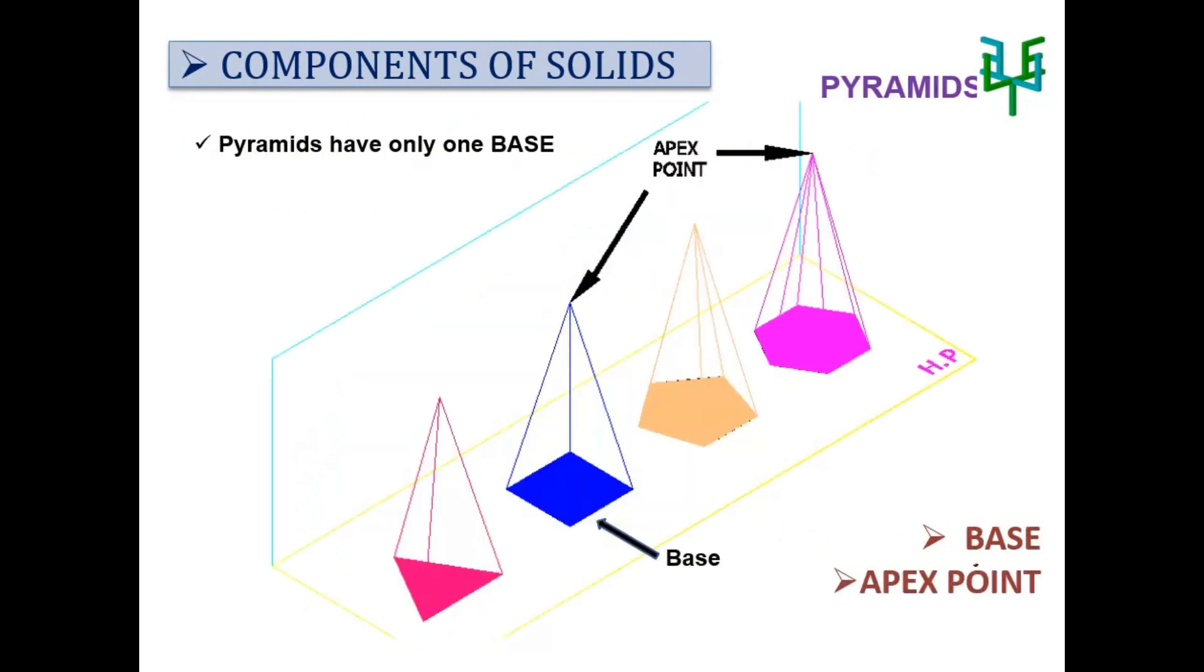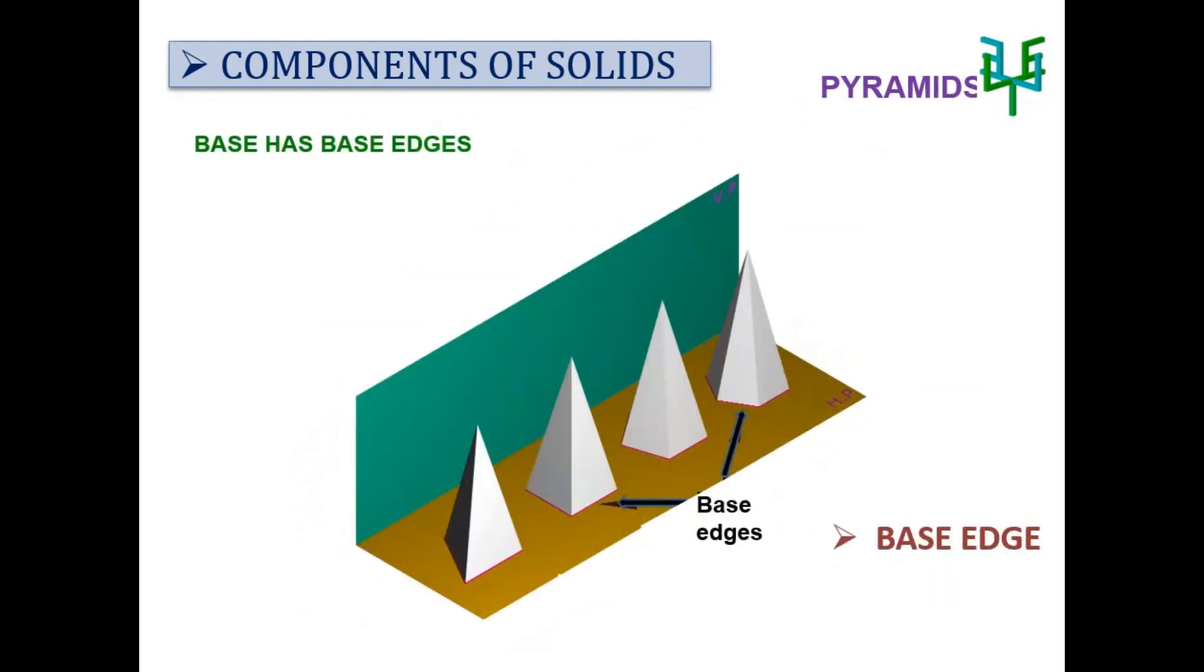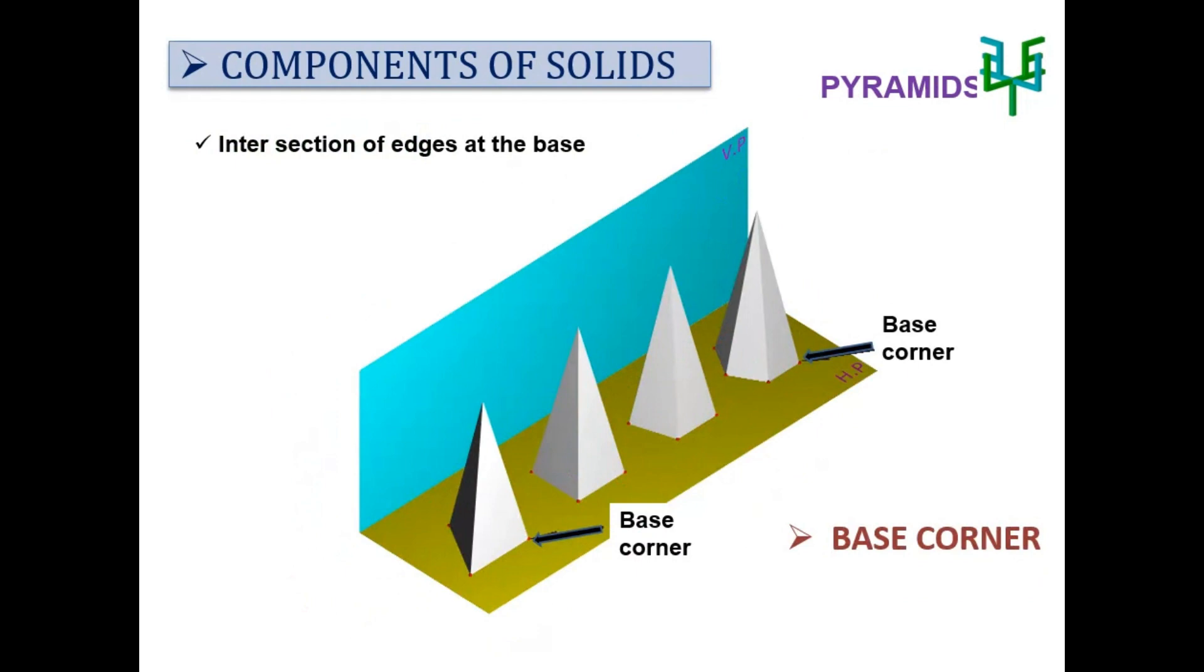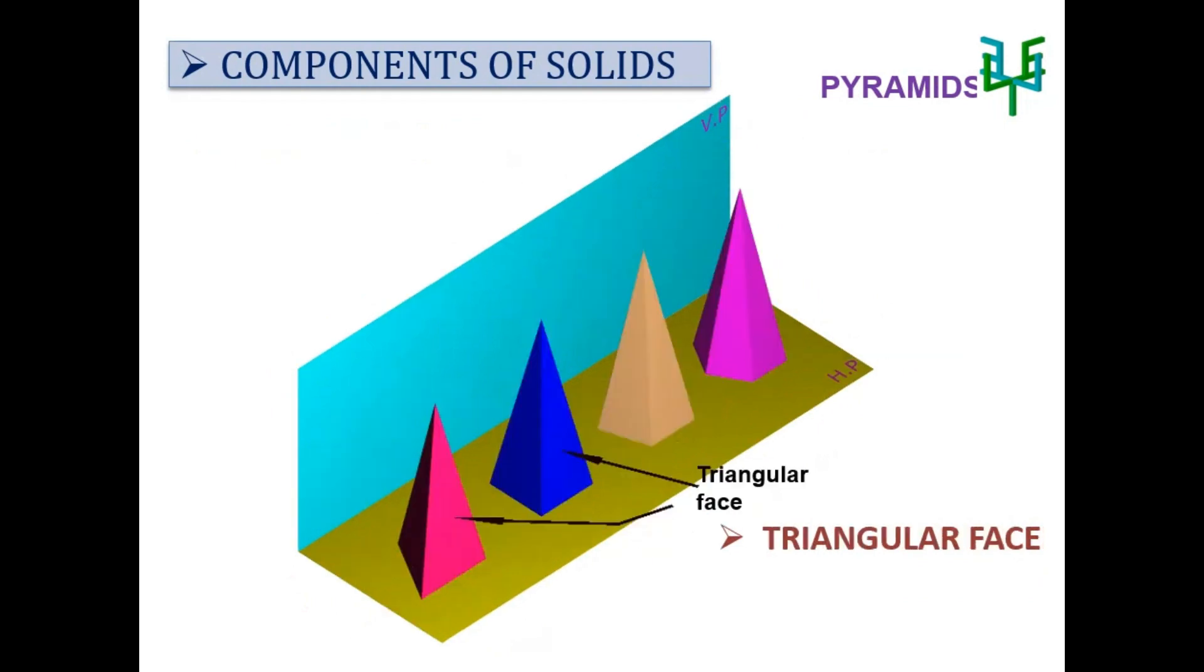A pyramid has only one base and an apex point or vertex point. Base edges are the edges of the base. Base corners are the intersection points of the base edges. Pyramids are having triangular faces at the sides.